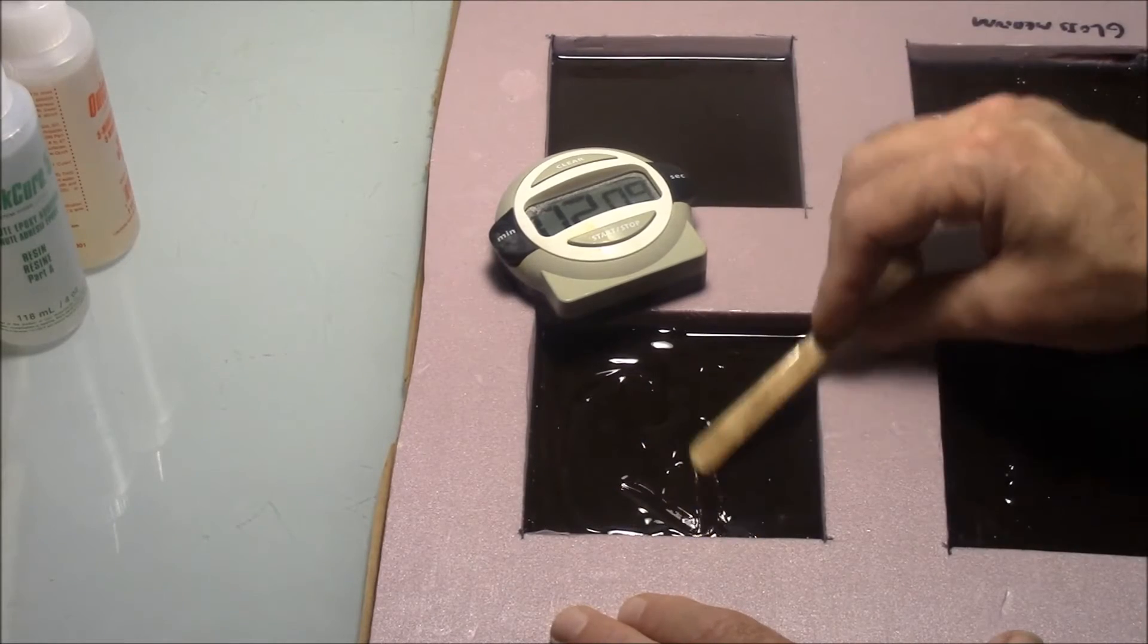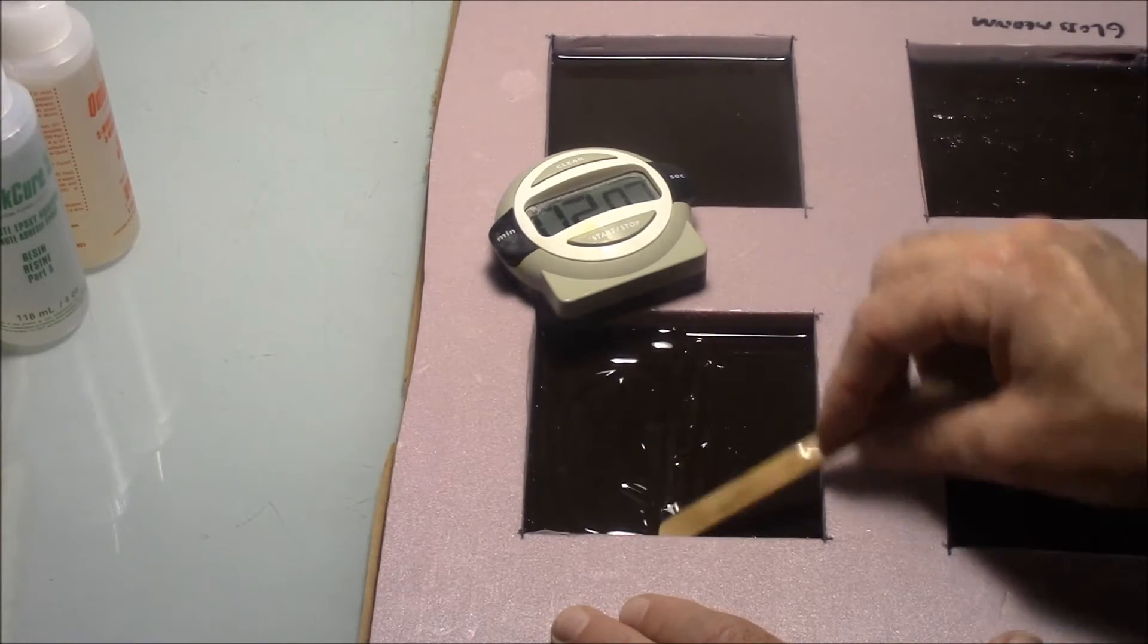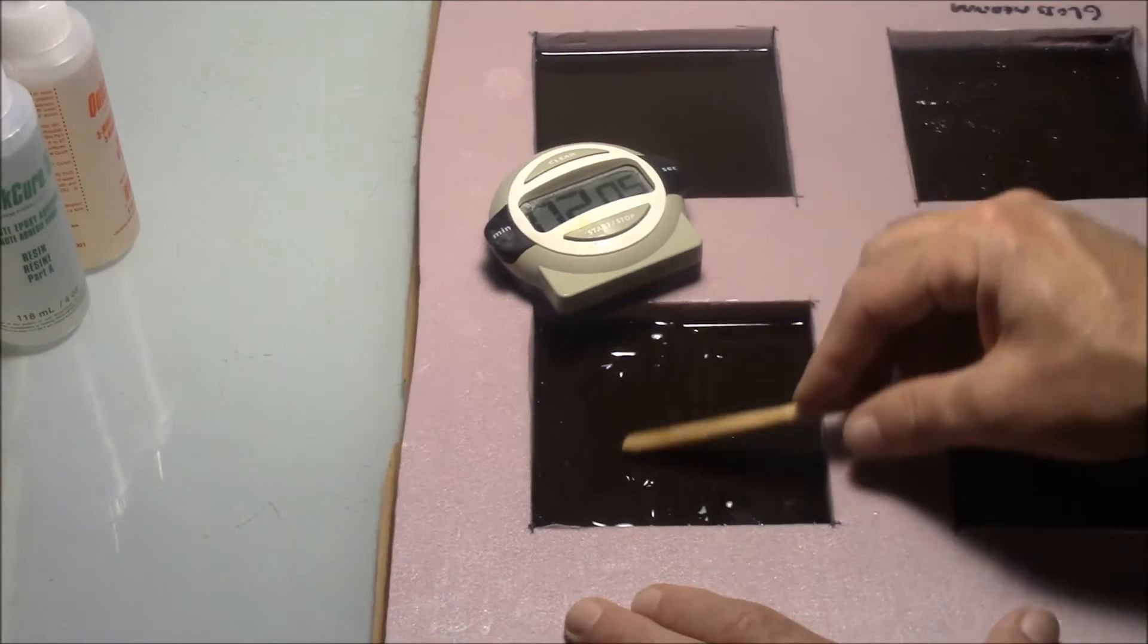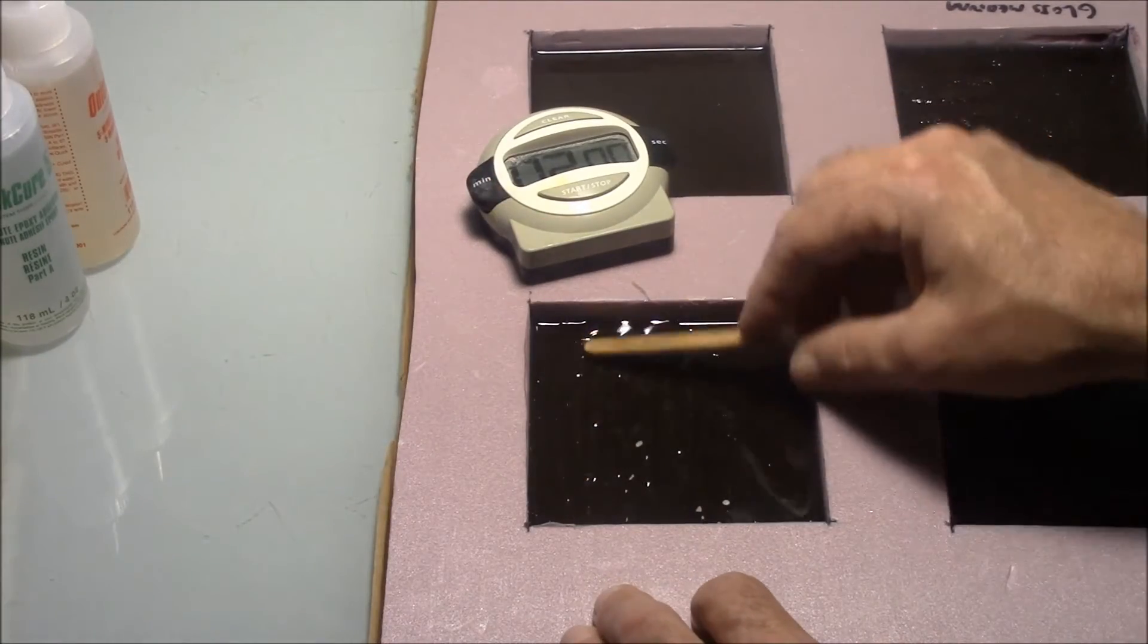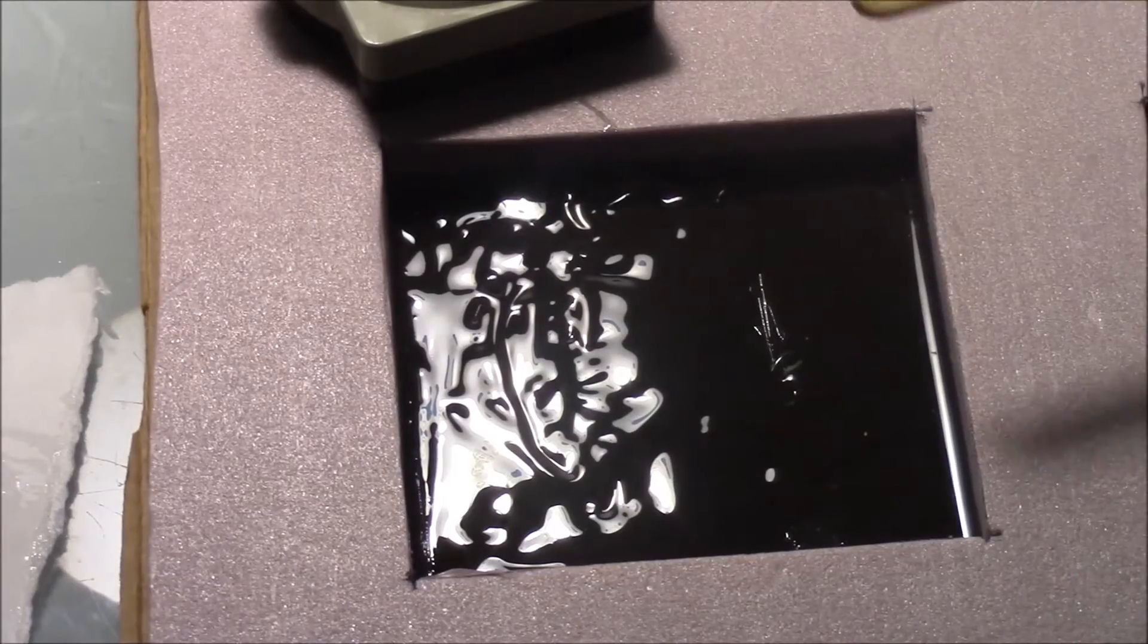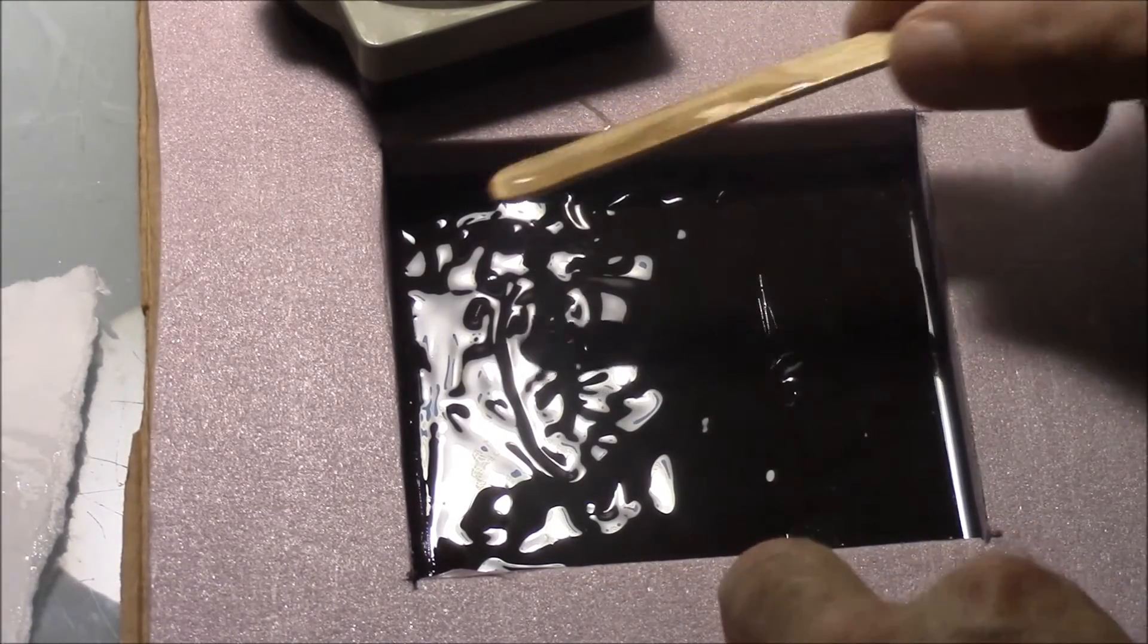So we've still got about two minutes before we need to start worrying here. So I'm just going to kind of even this out a little bit if there's any really thick lumps. And I'm just going to gently go back and forth over the surface. And what this will do is kind of pop some bubbles. There's going to be a little bit of air bubbles. Okay, it looks like our timer's got about seven seconds left on it.